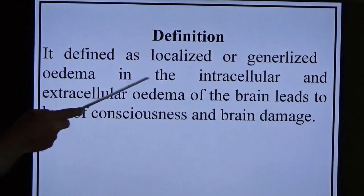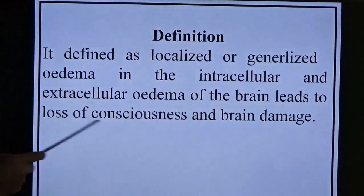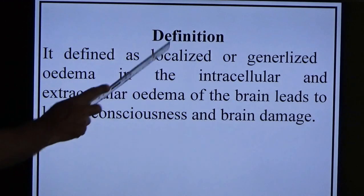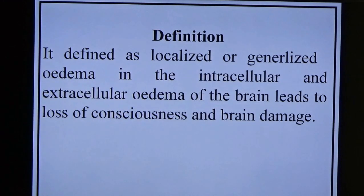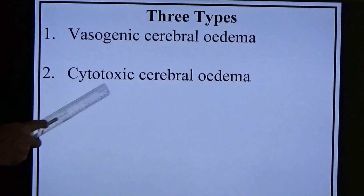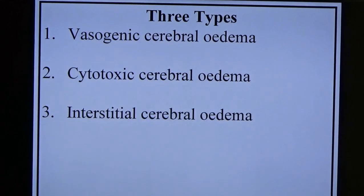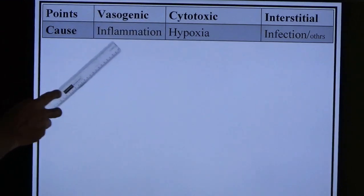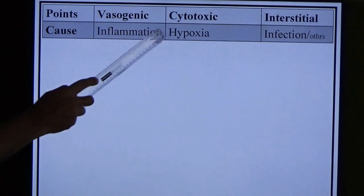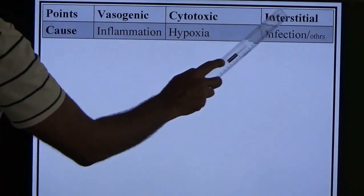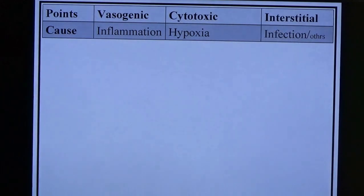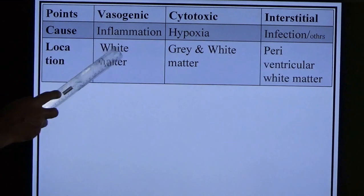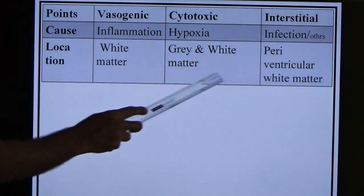Cerebral edema: localized or generalized edema in the intracellular and extracellular spaces of the brain, leading to loss of consciousness and brain damage. The central nervous system does not contain lymphatics. There are three types: vasogenic cerebral edema, cytotoxic cerebral edema, and interstitial cerebral edema. Vasogenic: caused by inflammation; cytotoxic: caused by metabolic issues; interstitial: caused by CSF secretion/leakage issues.